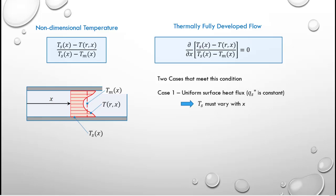If this is the case, the surface temperature of the tube must vary as a function of X. The second case is for a uniform surface temperature, meaning T_s is a constant. For this situation the heat flux must vary as a function of X.